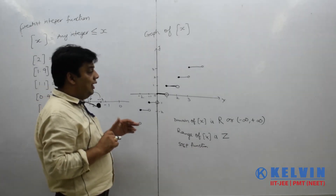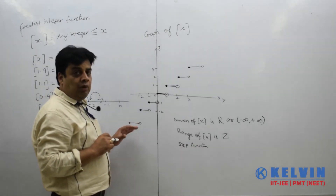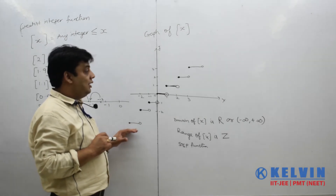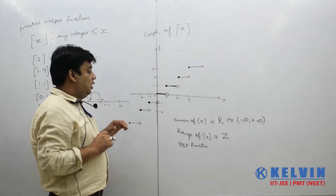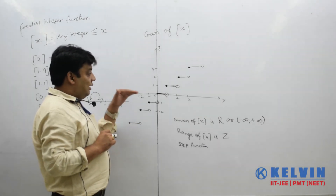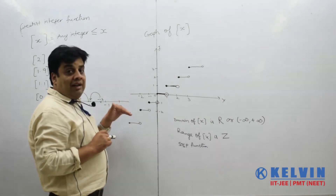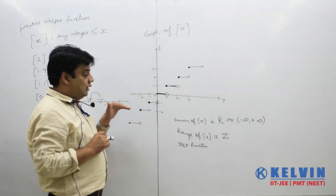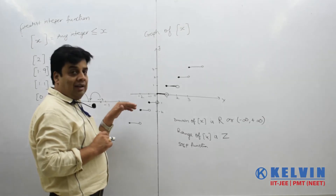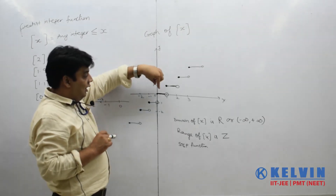Now we can discuss a few more properties of this Greatest Integer function. You can see that it is a discontinuous function.